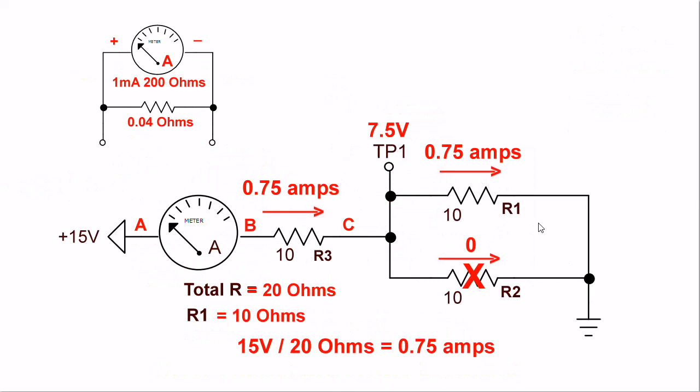But now our total resistance has changed from 15 ohms to 20 ohms. If I divide 15 volts by 20 ohms, I get 0.75 amps, or 750 milliamps. I get 750 milliamps through R1 and 750 milliamps through R3.